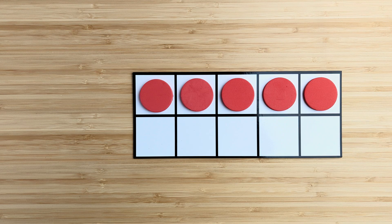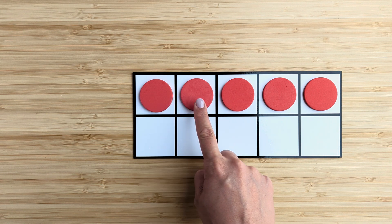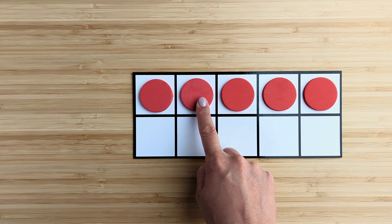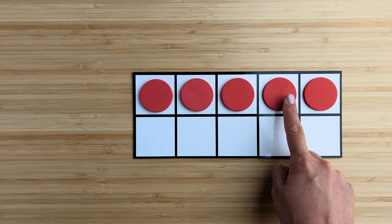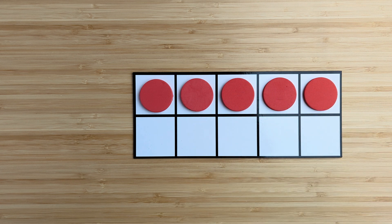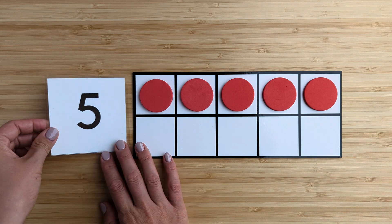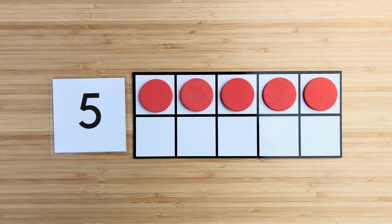How many in all? Point and count. One, two, three, four, five. Five. There are five red circles.